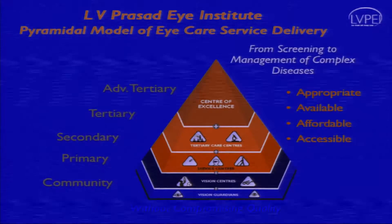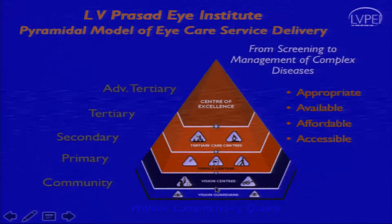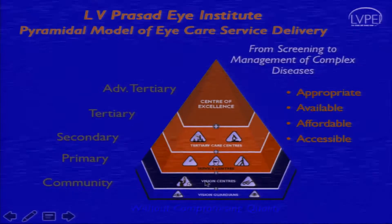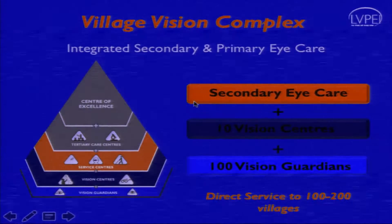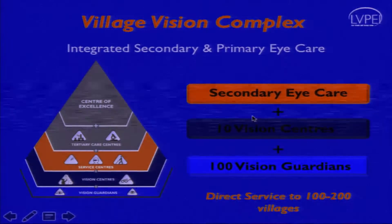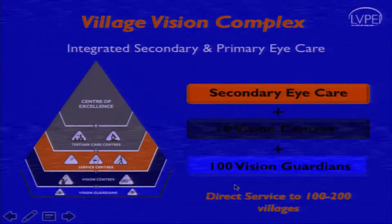Mukesh briefed about this eye health pyramid model where we have a center of excellence at the top and the vision guardian at the bottom. At the community level we have vision centers for a population of 50,000. One secondary center serves a half-million population, 10 vision centers again for a half-million — one for every 50,000 — and 100 vision guardians each for 5,000, forming a village vision complex.